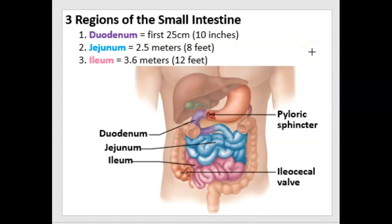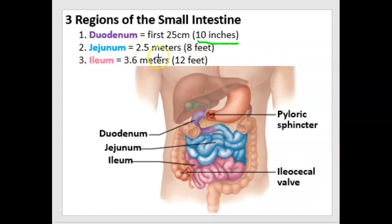There are three regions of the small intestine. The first region is about ten inches long and is called the duodenum — shown in purple. The jejunum is the second or middle portion of the small intestine, about eight feet long, or two and a half meters — shown in blue. The most distal portion is called the ileum, spelled I-L-E (not I-L-I, which would be the bone). The ileum is twelve feet long, equivalent to 3.6 meters.